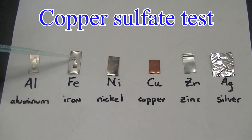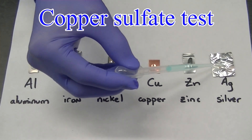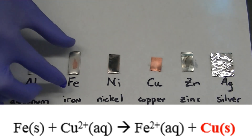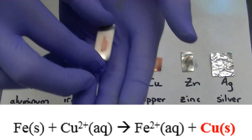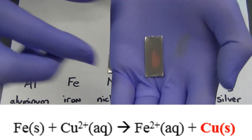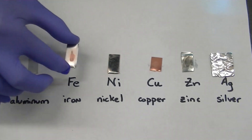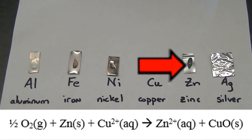In the copper sulfate test, a solution of copper sulfate that has been slightly acidified is applied to the surface of metals. On the surface of iron metal, copper ions react with the iron metal to form solid copper — you can even see the solid copper plate out with a slight orange color on the surface of the iron. Zinc metal also shows evidence of reacting with the copper solution; in this case a black color forms on the surface of the zinc.